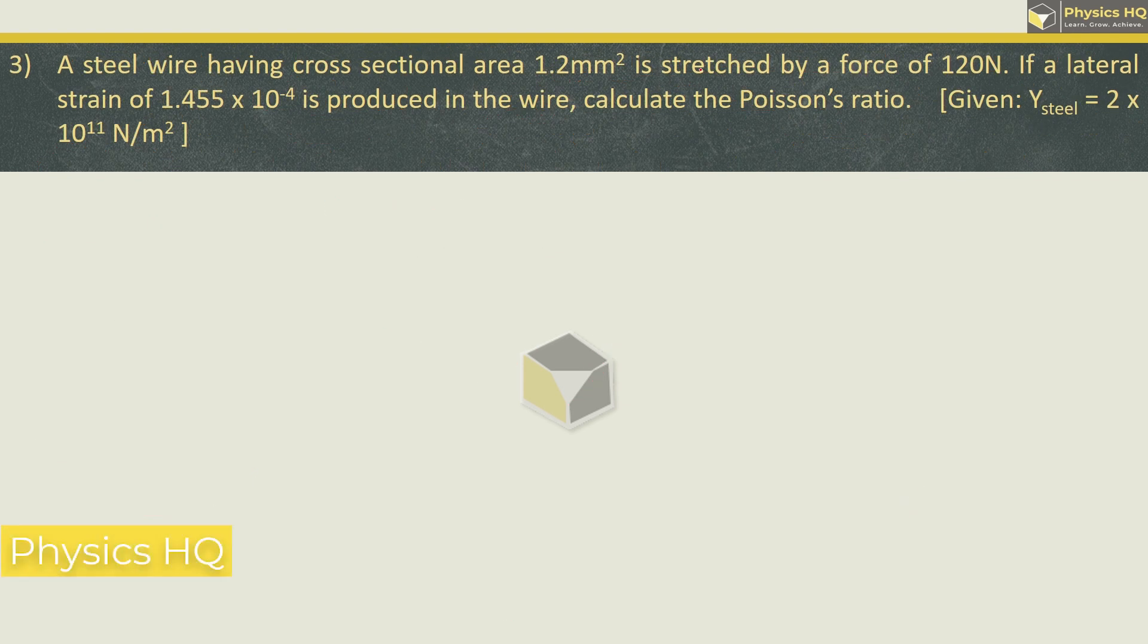A steel wire having cross-sectional area 1.2 mm² is stretched by a force of 120 N. If a lateral strain of 1.455 × 10^-4—textbook I have not given it, but it will come. But we all know that strain has no dimension. Strain is a ratio of change in dimension upon original dimension. This is a correction to note. This is produced in the wire. Calculate the Poisson's ratio.